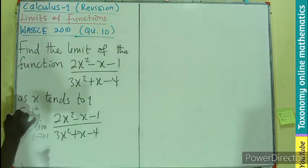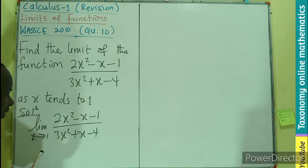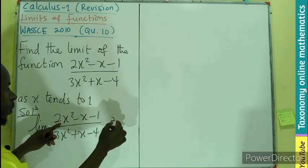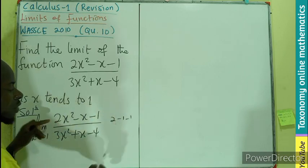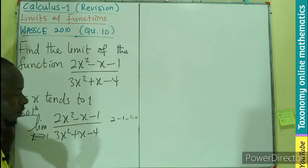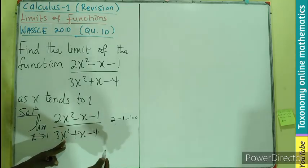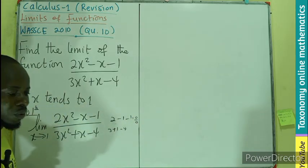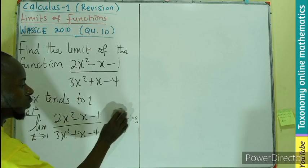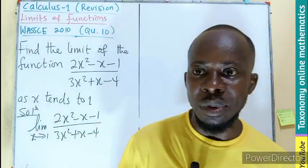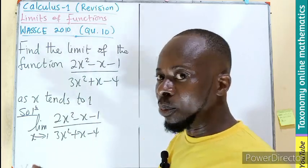So we just have to put in the values of x as 1. So 1 here would be 2 minus 1 minus 1, this is going to be 0 in the numerator. Then when I put 1 here, this is going to be 3, this is going to be 1, this is going to be 4. So 0 divided by 0, indeterminate form. So we have to reduce the numerator and the denominator once more to the simplest form.